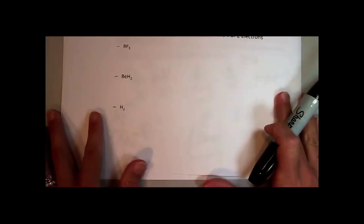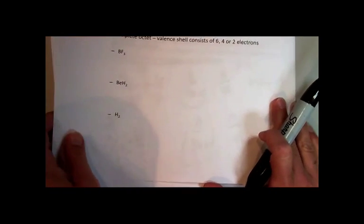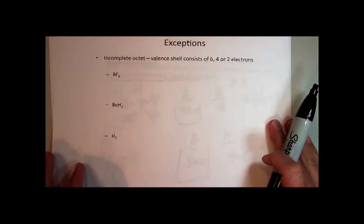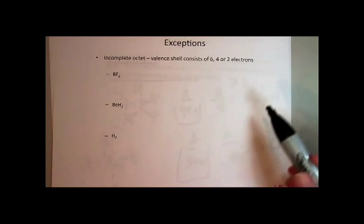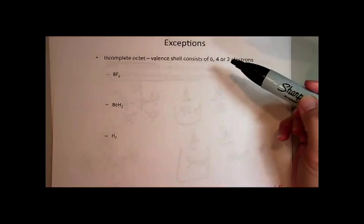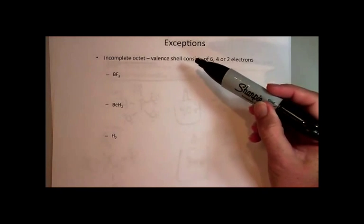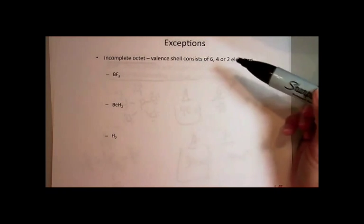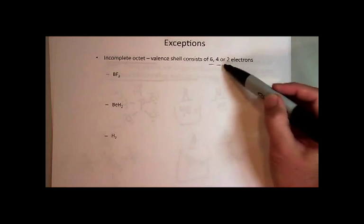There's another type of exception, and this is called an incomplete octet. Some smaller atoms, elements that are smaller at the beginning of the periodic table, can be stable with six, four, or just two electrons.